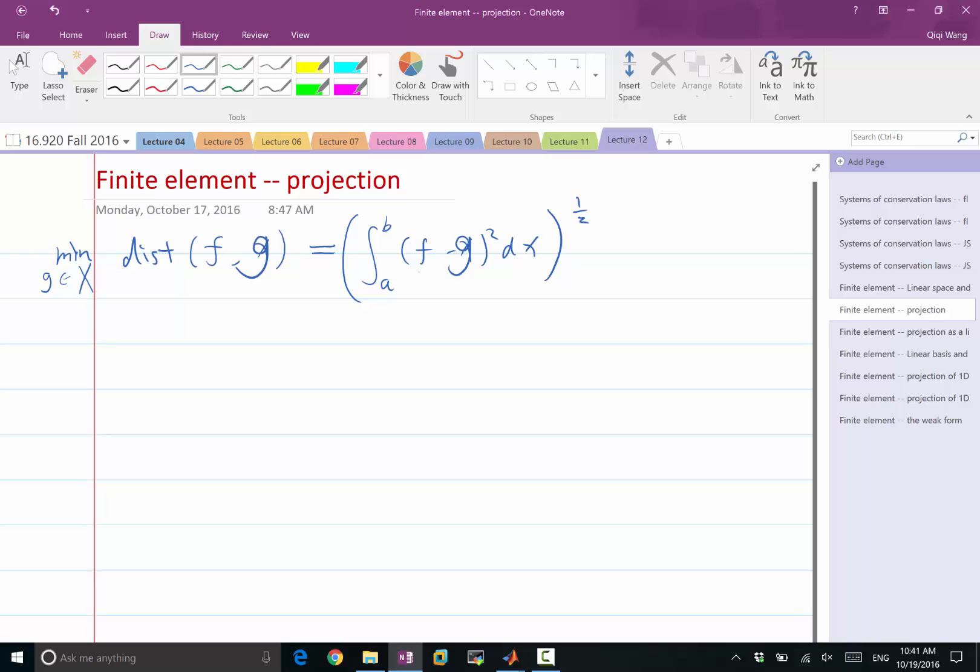So the orthogonality can be expressed like that. Orthogonality to a space. So let's say if I go from f to g, that is g minus f. g minus f is the vector from f to g. The vector from f to g is orthogonal to the space X, is defined as for any g prime in X, g minus f times g prime is integrated to 0. So that's the meaning of orthogonality.